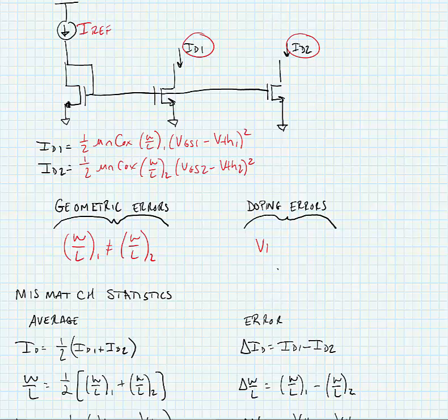We could also have doping errors in the process that cause the threshold voltages not to be equal. And this is exclusively a process variation problem.